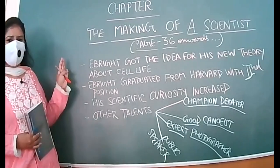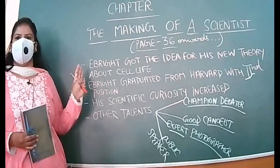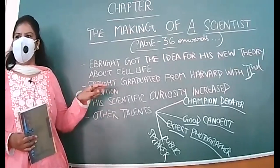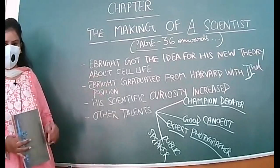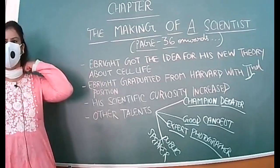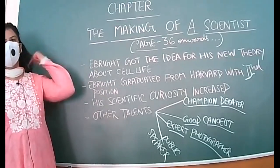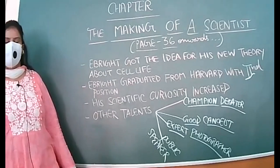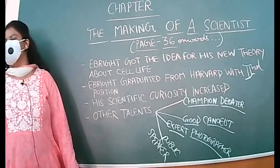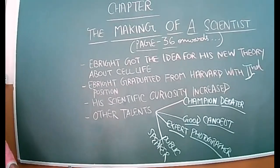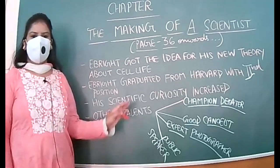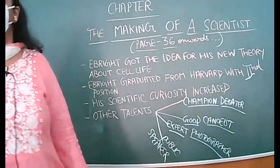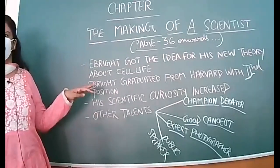The very first point is Ebright got the idea for his new theory about cell life. On page 36, we will be reading about how Ebright generated the idea for his new theory about cells and with whose help he continued this invention. Next, Ebright graduated from Harvard with second position, one of the best universities in the world, which is quite impressive.